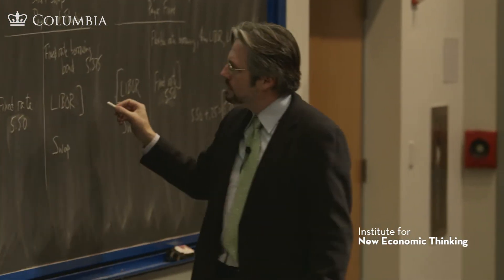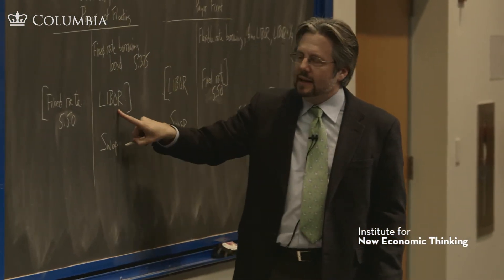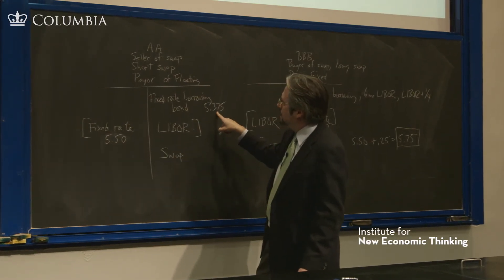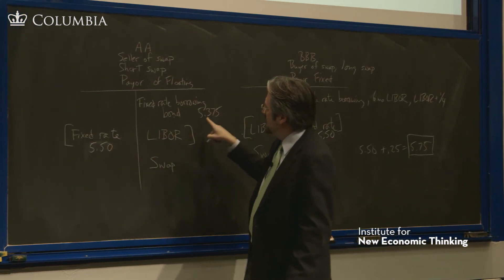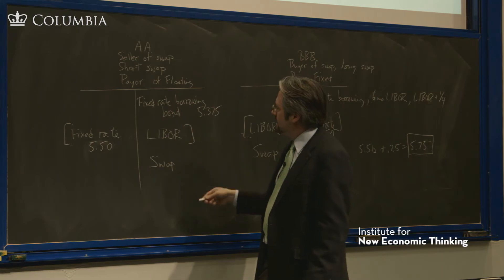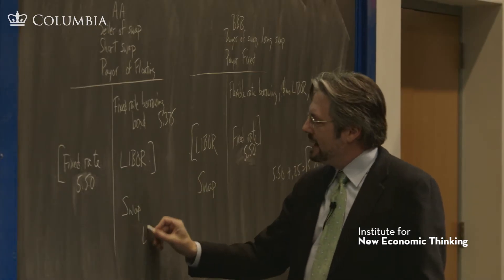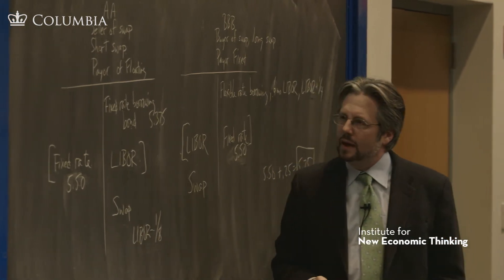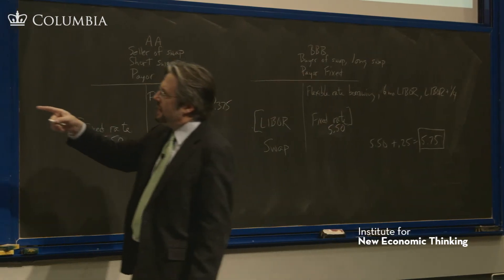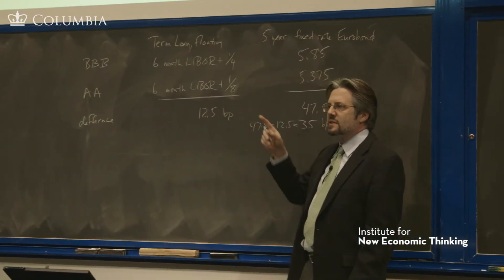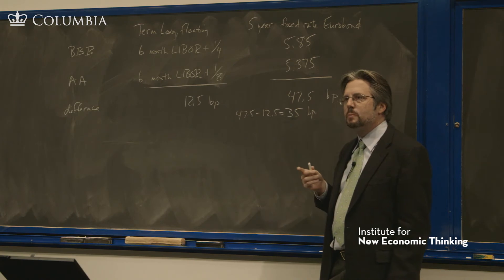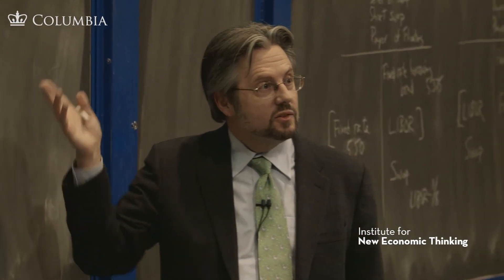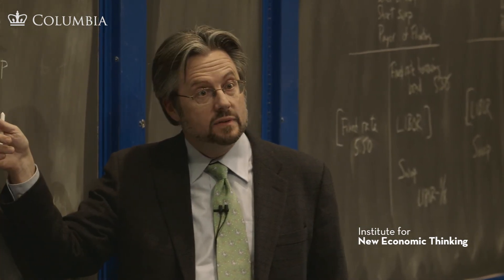Do the same math here, and AA is locking in LIBOR funding. The difference between 5.50% and 5.375% means they acquire funding at LIBOR minus an eighth, which is 12.5 basis points better than they could borrow on their own at LIBOR plus an eighth. So AA got 25 of the basis points, and BBB got 10 of the basis points, and that's where the 35 come.